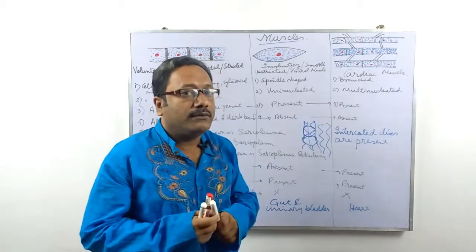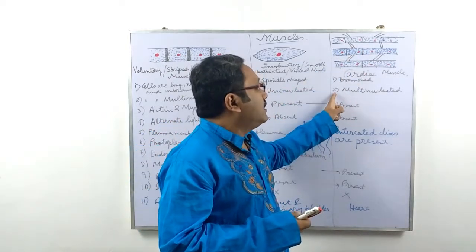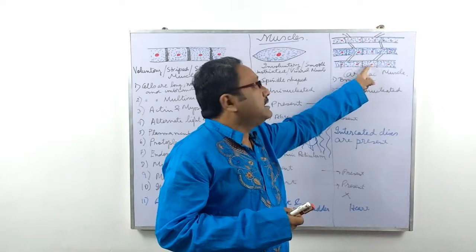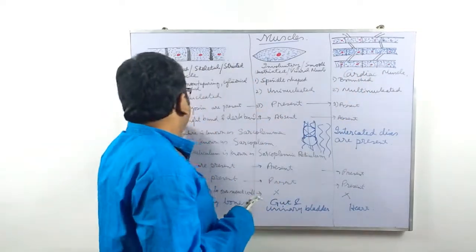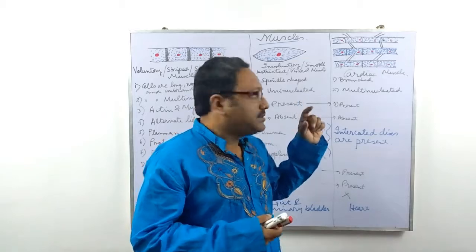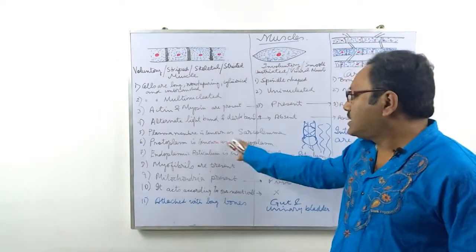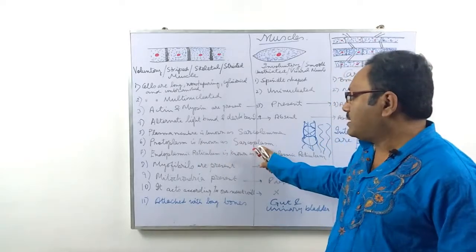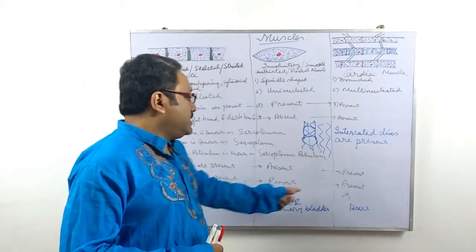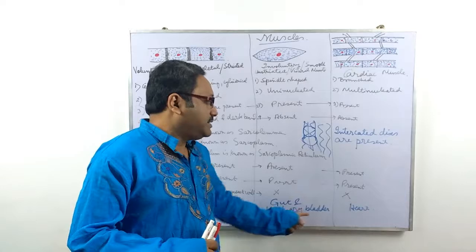Now the main points of cardiac muscle: it is branched in nature. Number two: multi-nucleated. These are the intercalated discs — not the plasma membrane. Actin and myosin proteins are present, which is why contraction and relaxation occur. The plasma membrane is known as sarcolemma, protoplasm is known as sarcoplasm, and endoplasmic reticulum is known as sarcoplasmic reticulum. Mitochondria is present. It cannot act with our will and is present in the heart.